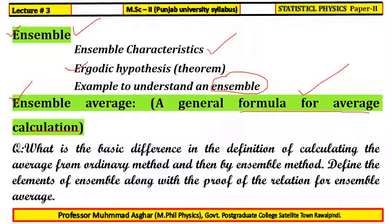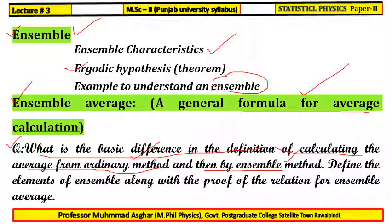After these two topics, we will be able to answer a question present in previous university papers: what is the basic difference between the average calculated from the ordinary method studied in the previous lecture and the ensemble method studied in this lecture. We will also define the elements of ensemble with proof of validation for ensemble averages.